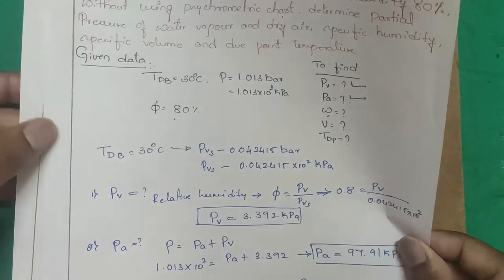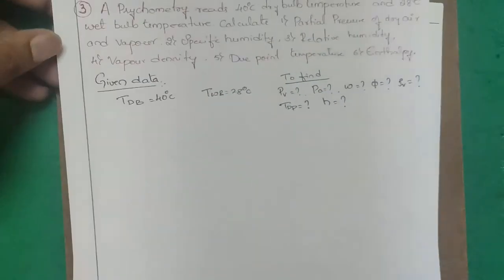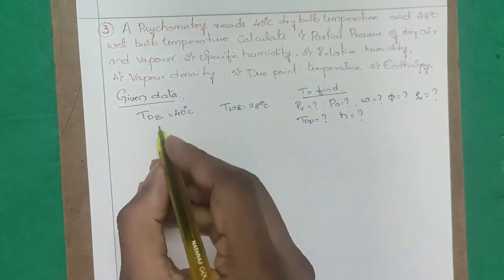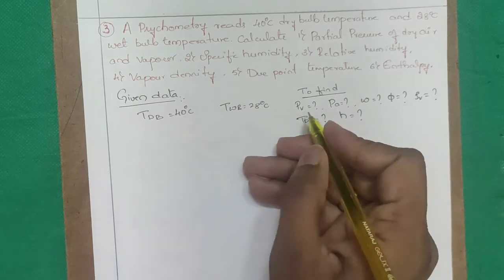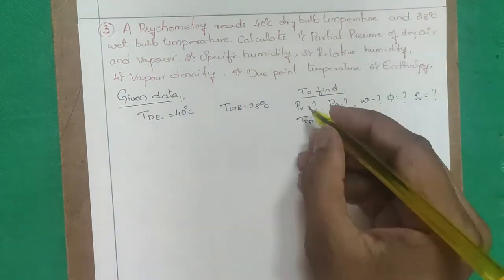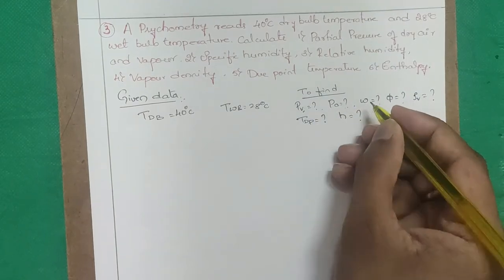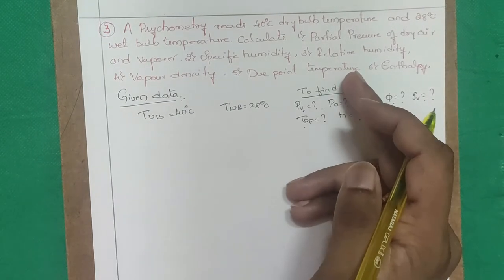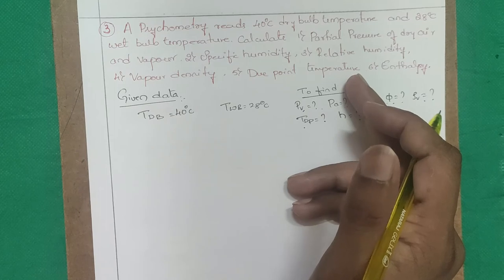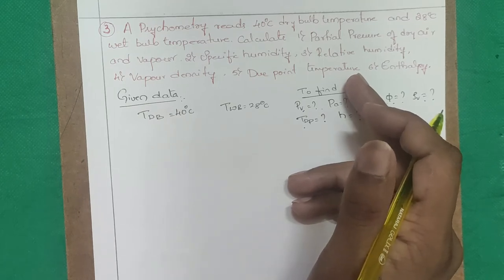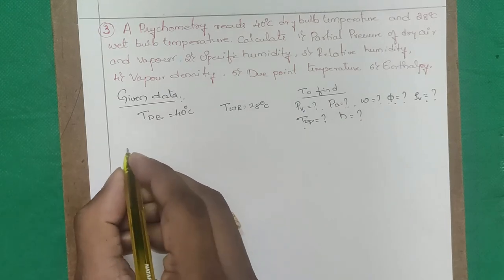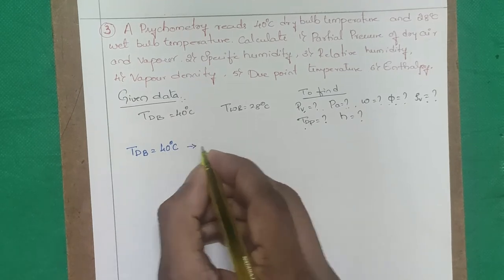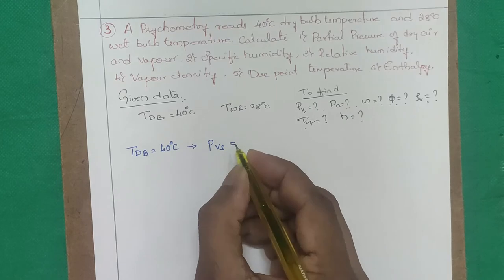Problem 3: psychrometer reads dry bulb temperature = 40°C and wet bulb temperature = 28°C. Calculate: partial pressure of vapor, partial pressure of dry air, specific humidity, relative humidity, density, dew point temperature, and enthalpy — all without using a psychrometric chart.